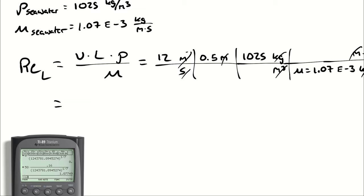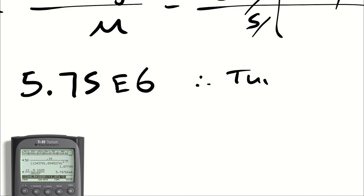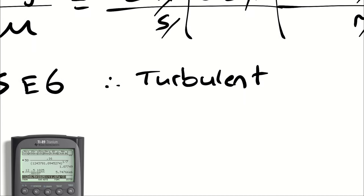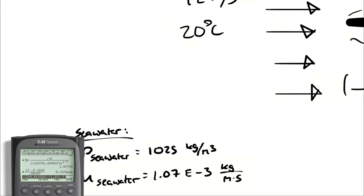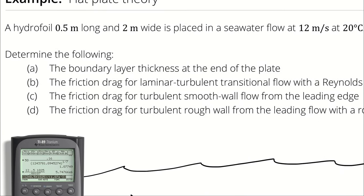So calculator, that's 12 times 0.5 times 1025 divided by 1.07 times 10 to the negative third. Calculator says 5.75 e6, which is definitely turbulent, which was kind of implied by the fact that I had asked for the drag force for a variety of turbulent flow characteristics.